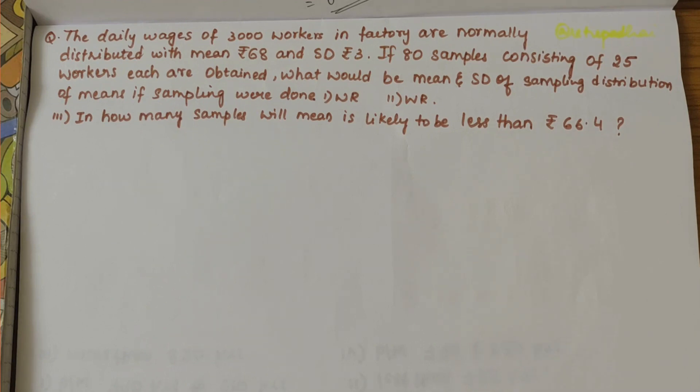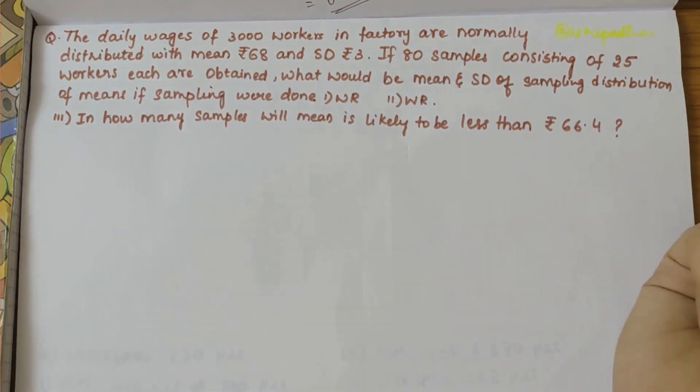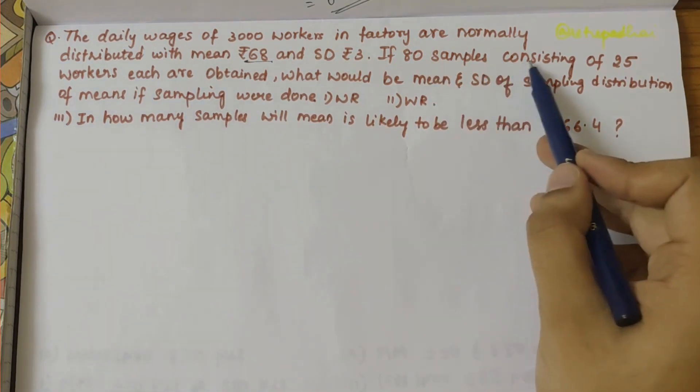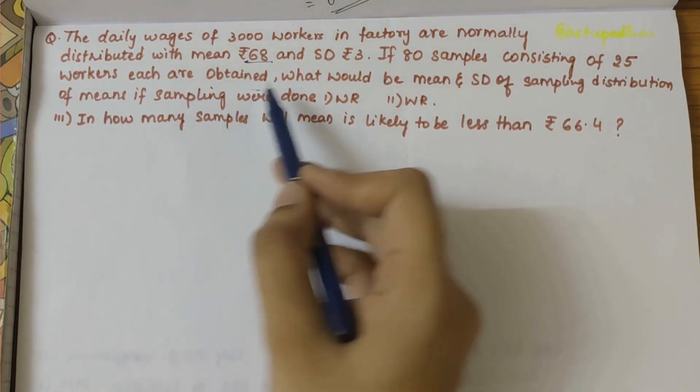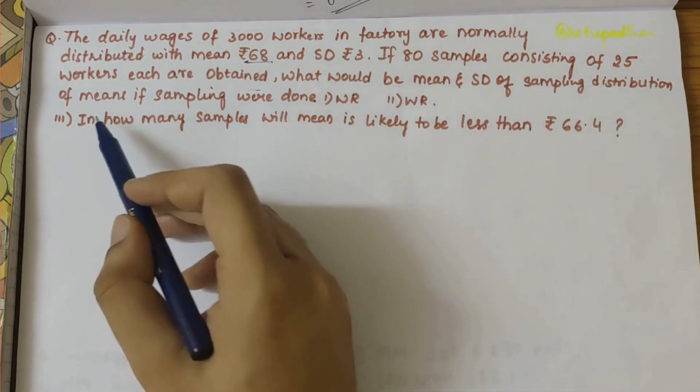In this video we will be solving the given numerical. The problem statement says that the daily wages of 3,000 workers in a factory are normally distributed with mean of 68 rupees and standard deviation of 3 rupees. If 80 samples consisting of 25 workers each are obtained, what would be the mean and standard deviation of sampling distribution of mean if sampling were done with replacement or without replacement.